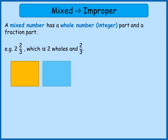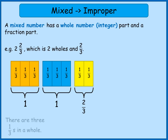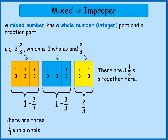So 2 and 2 thirds: I've got 2 whole ones and then 2 thirds. I also know that 1 whole one is the same as 3 thirds. So I can split each of those whole ones into thirds, and altogether I've now got 3, 6, and then with these two here, 8 thirds altogether. So I can write 2 and 2 thirds as 8 thirds.